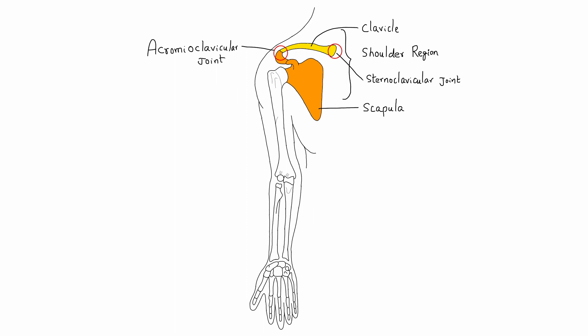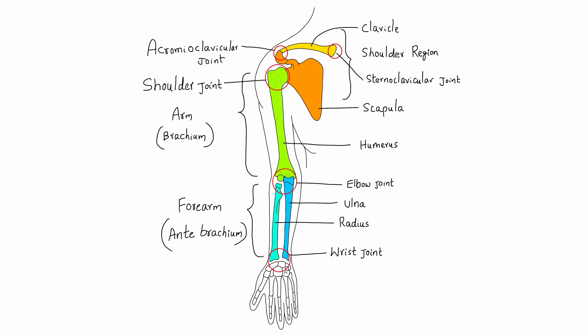The clavicle and scapula articulate with each other at the acromioclavicular joint and form the shoulder girdle. The shoulder girdle articulates with the rest of the skeleton only at the small sternoclavicular joint. The arm is the part of the upper limb between the shoulder and elbow or cubitus. The bone of the arm is the humerus, which articulates with the scapula at the shoulder joint and with the upper ends of radius and ulna at the elbow joint.